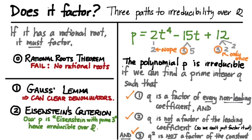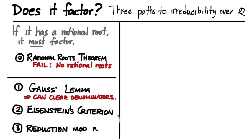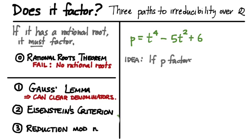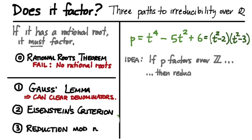Eisenstein's Criterion is incredibly powerful and is the one you'll use most often in this course. We have one more technique to use if a polynomial doesn't yield to any of these: the technique of last resort, which we're going to call reduction mod n. Here's the idea: let's suppose we have a polynomial like t to the 4th minus 5t squared plus 6 that we know factors over the integers — it's t squared minus 2 times t squared minus 3.